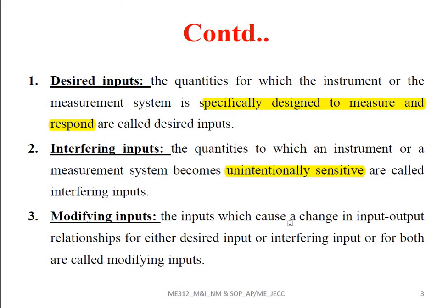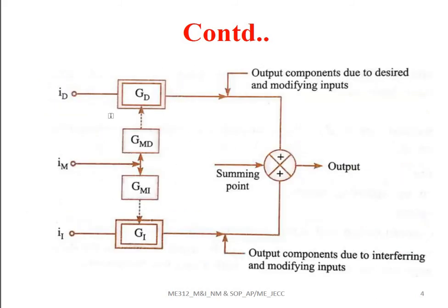The third type is the modifying inputs. These are quantities which cause a change in the input-output relations for either the desired input, the interfering input, or both. Slight variations in the desired or interfering inputs can be modified with the help of these modifying inputs. This can be explained with the help of a block diagram.